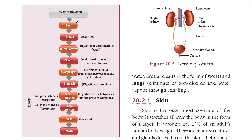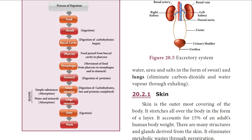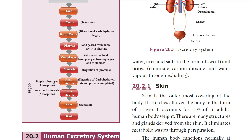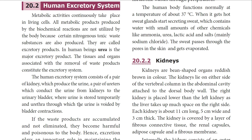In summary, food is ingested by the mouth, passes through the buccal cavity, pharynx, esophagus, and stomach. Digestion of food takes place in the small intestine, where absorption of simpler digested substances also occurs. In the large intestine, water and mineral salts are absorbed, and through the anus the waste material is eliminated — that process is called egestion.